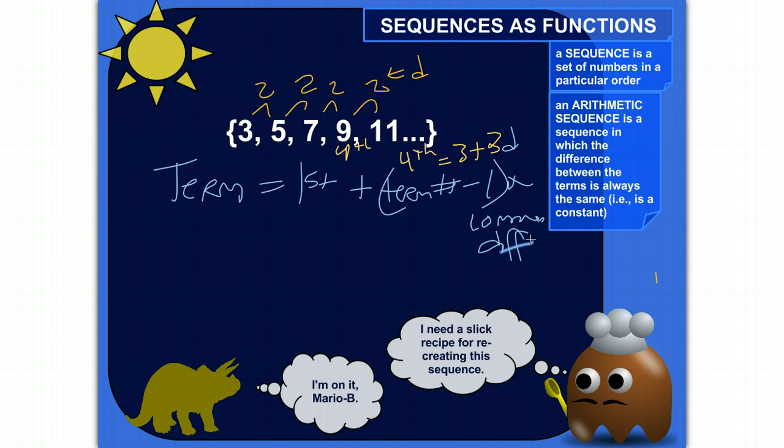And if I want to clean that up and put that into math, what I would say is F of N. And N is going to stand for the term number. So N for 3 would be 1, N for 5 would be 2, N for 7 would be 3, N for 9 would be 4.